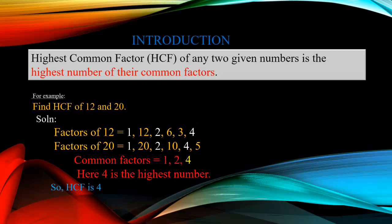Now, let us see one example. Find HCF of 12 and 20. First step: factors. Factors of 12 — 1×12, 2×6, 3×4. So your factors are 1, 12, 2, 6, 3, 4.